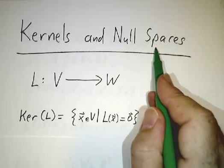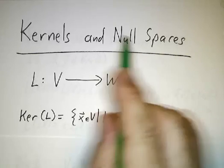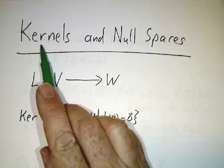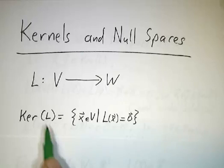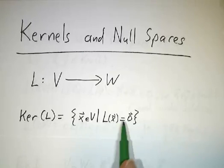Now, null spaces—that's something associated with matrices. Kernels are associated with linear transformations. We're going to see in a couple of minutes how they're related. But in any case, the kernel is all the things that get sent to zero.